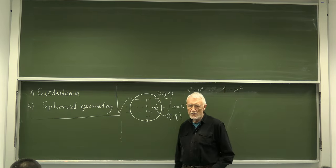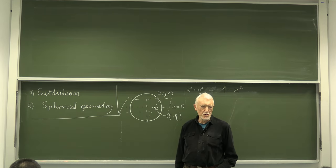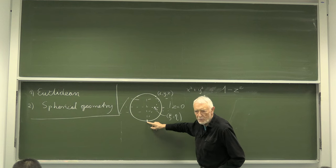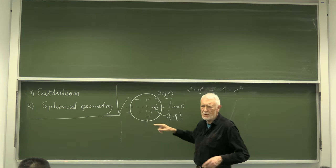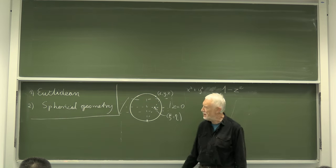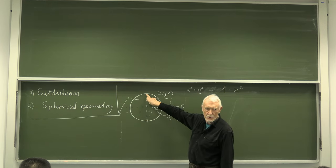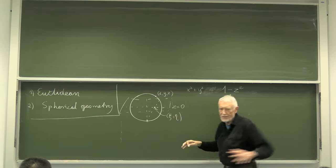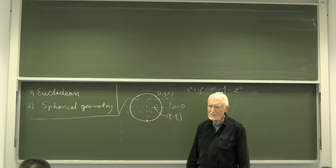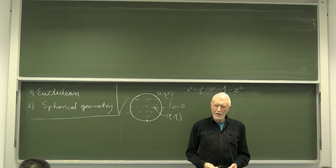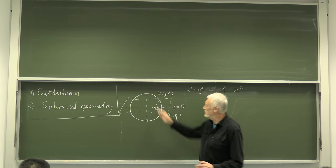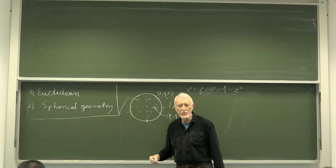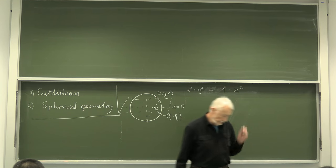This one-to-one correspondence is not exactly true — it is one-to-one except for one point: the south pole does not correspond to a point on the plane, it corresponds to infinity. This is obvious because there is no topological isomorphism between a sphere and an open plane, but if you remove one point then they are topologically equivalent.